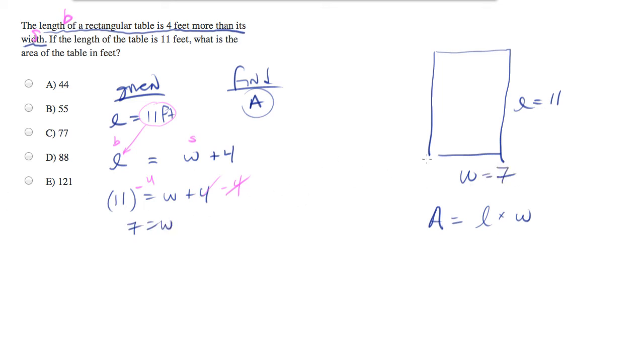Now, we can plug in 7 and 11 to our area formula to show that area equals 7 times 11, or 77, which is C.